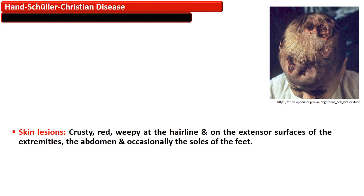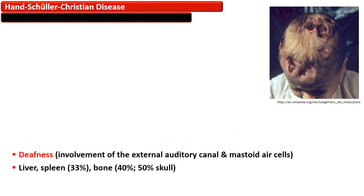The skin lesion is characteristic — a crusty, red, weepy lesion at the hairline and on the extensor surface of the extremities. The lesion may also be present on the abdomen and occasionally the sole of the feet. When the external auditory canal and mastoid air cells are affected, it results in deafness.